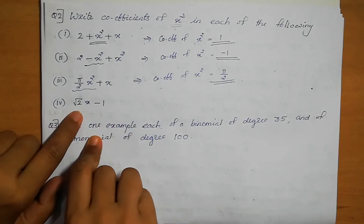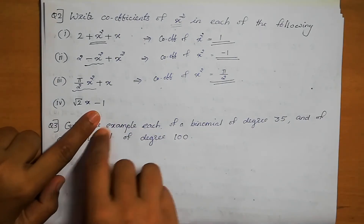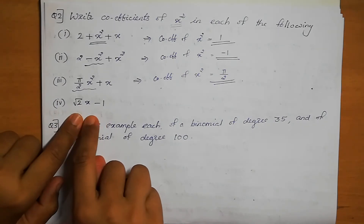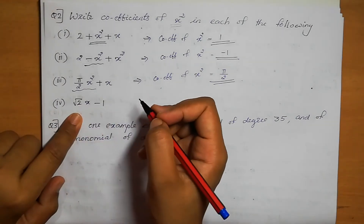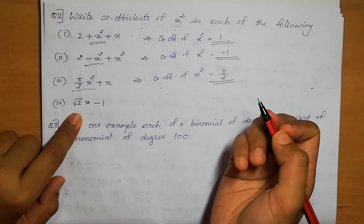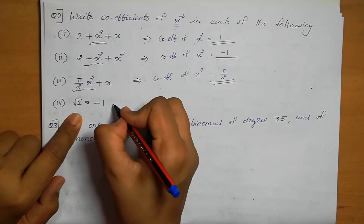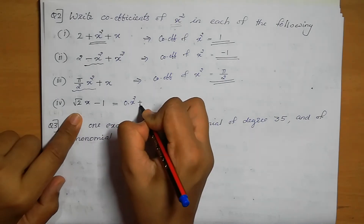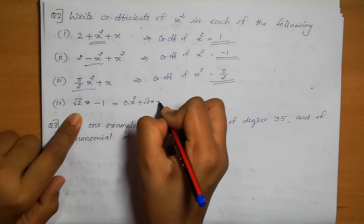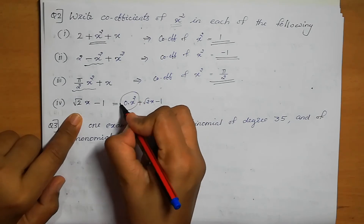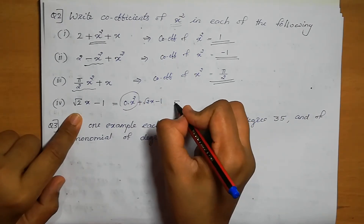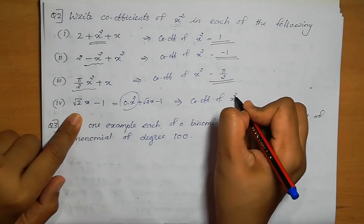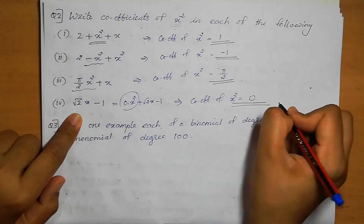Question 4: root 2 times x minus 1. There is no x squared term here. So we can write it as 0 times x squared plus root 2 times x minus 1. Therefore, the coefficient of x squared is 0.